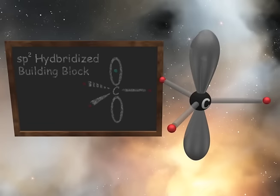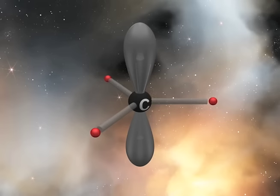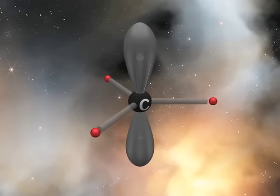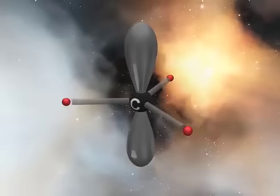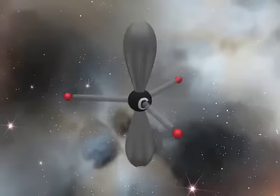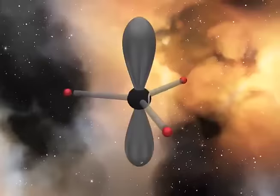Your instructor will often draw the sp2 hybridized carbon on the blackboard as shown. Remember that solid lines are in the plane of the board, wedges are coming out of the plane of the board, and dashed lines are going back behind the plane of the board. Before we begin to show how the sp2 hybrid building block takes part in bonding, it is important to remember that the electron in the unhybridized 2p orbital has access to both lobes. Each of the three sp2 hybrid orbitals contains one electron capable of forming a sigma bond. Thus, the sp2 hybridized carbon is now capable of forming three sigma bonds and one pi bond.